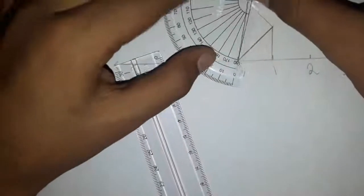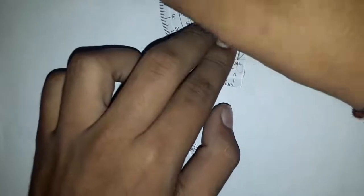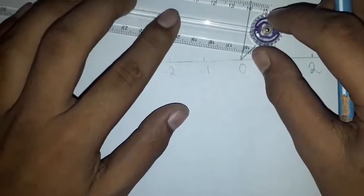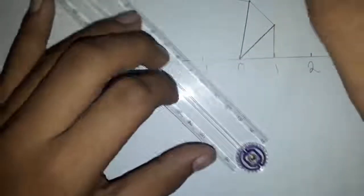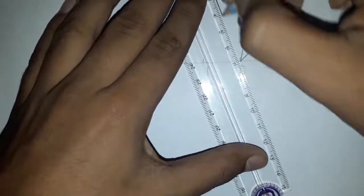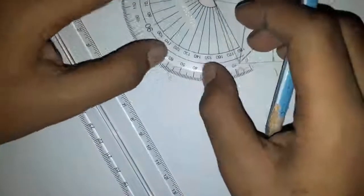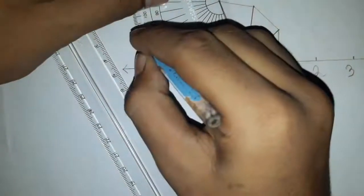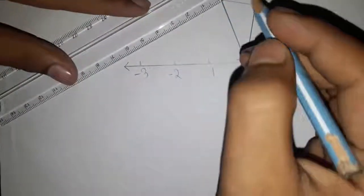Again take 90 degrees from here. You have to take two centimeters and have to join it. Now again, the final 90 degrees, you have to take it in two centimeters.